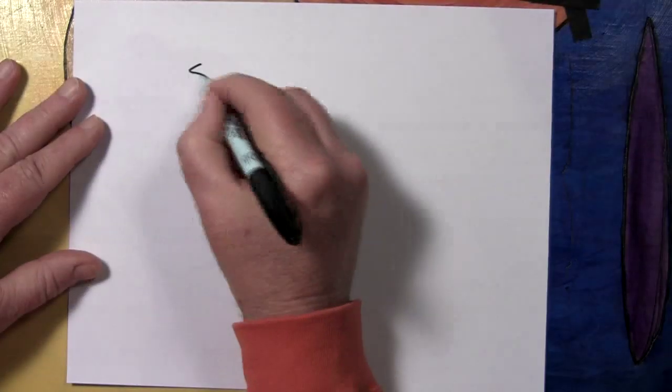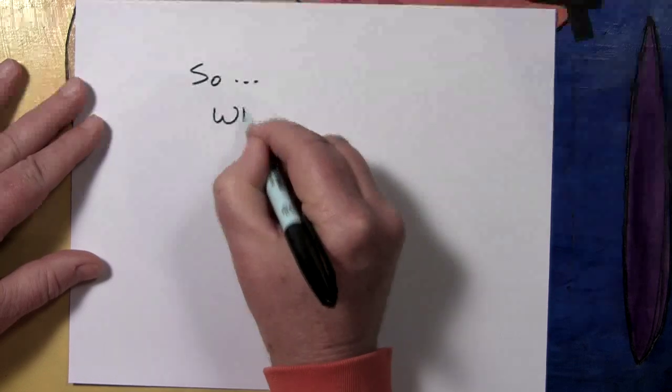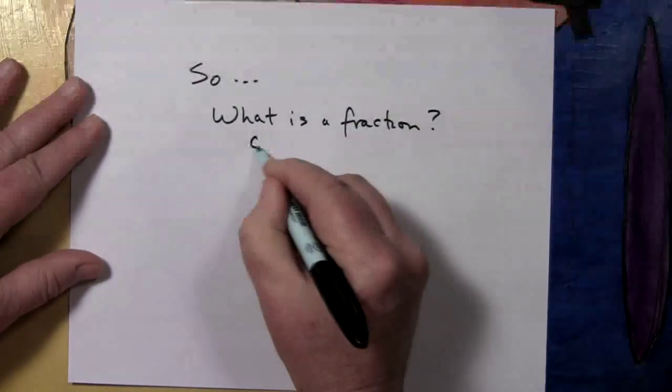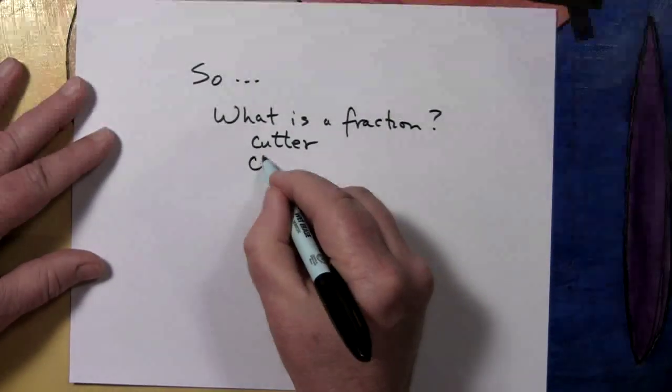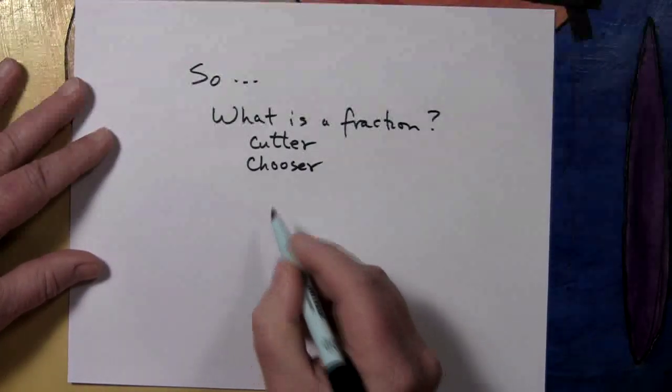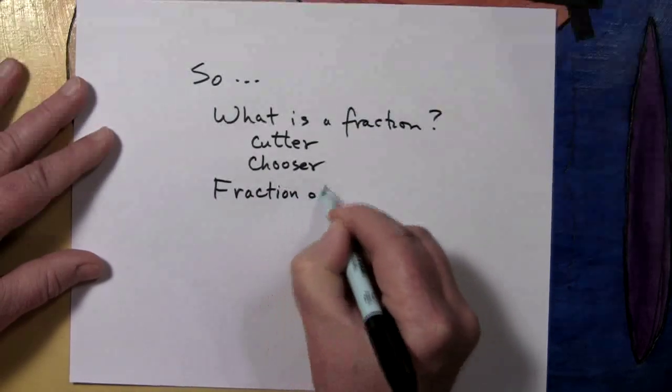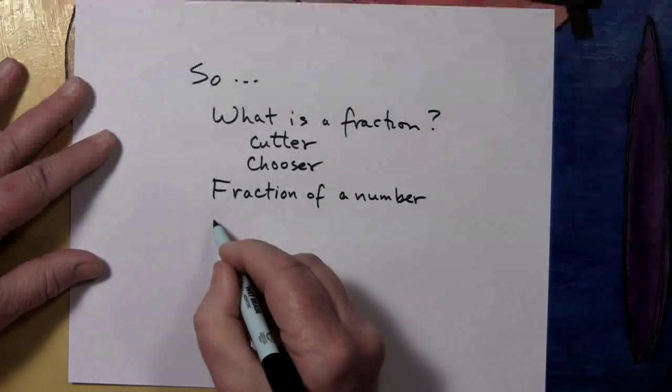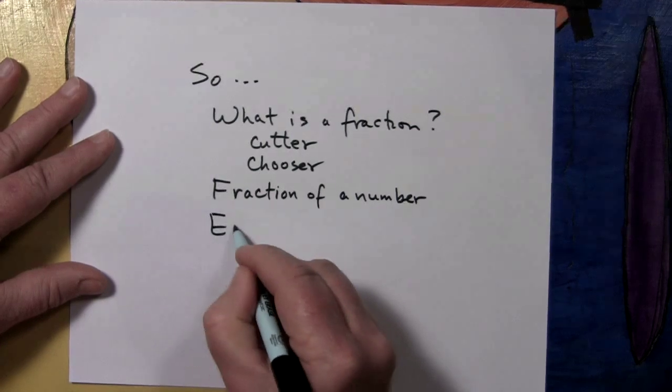Voila. So what have you learned? You've learned, what is a fraction really? You learned it has a cutter, that's the bottom. And you learned it has a chooser that selects and chooses those pieces. Then you've learned how you find a fraction of a number. The cutter explodes that number, the chooser picks up the pieces, joins them together, and finds the full piece. Then you've got equivalent fractions.